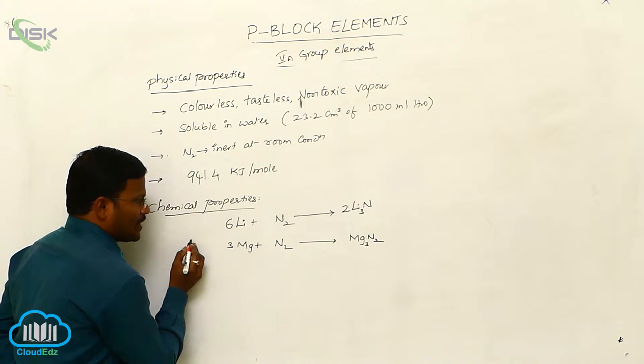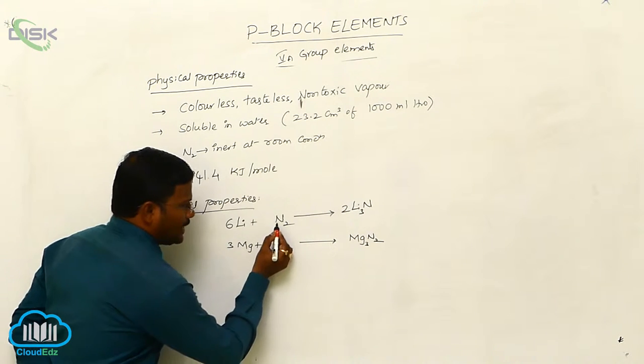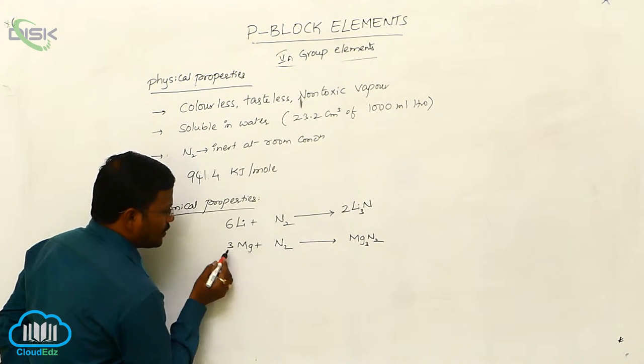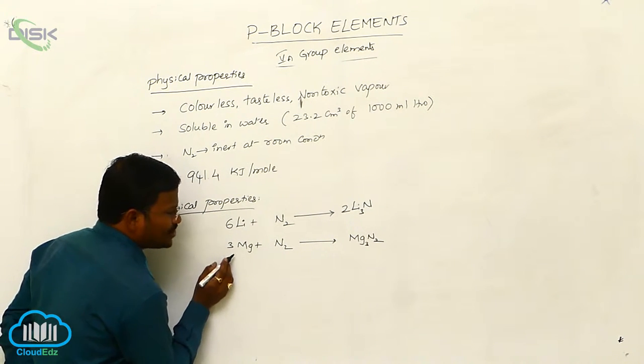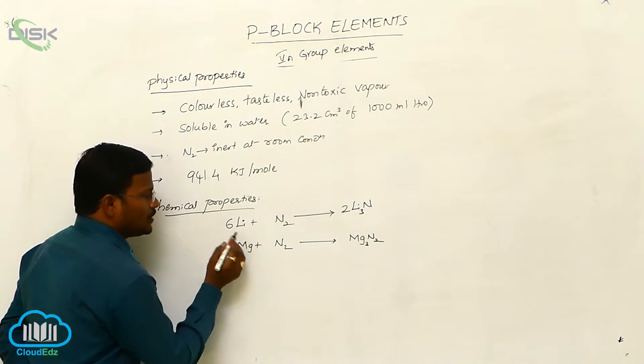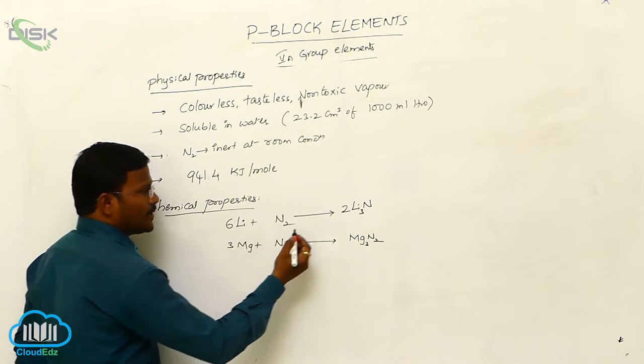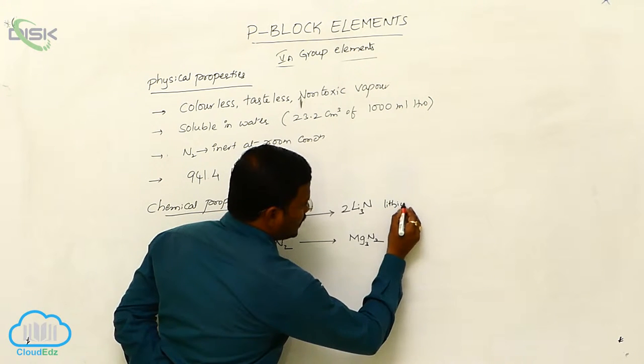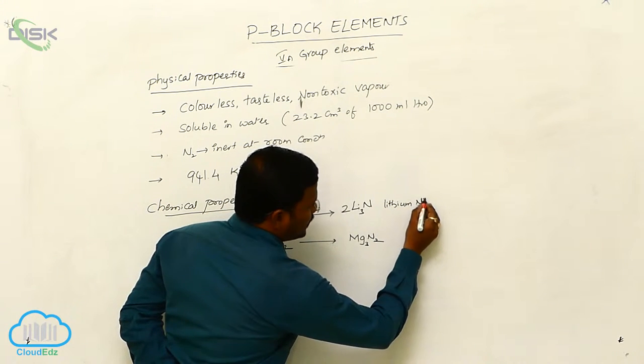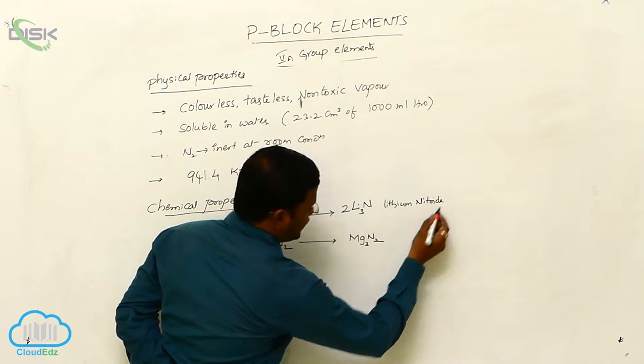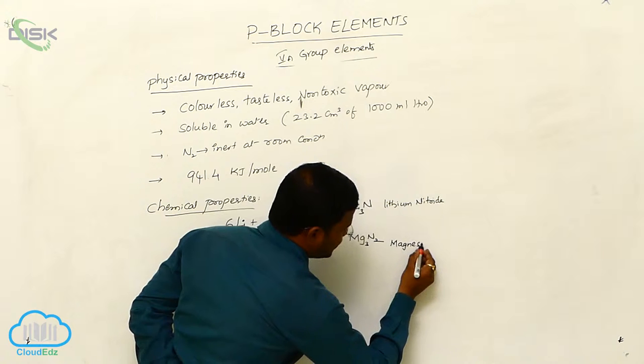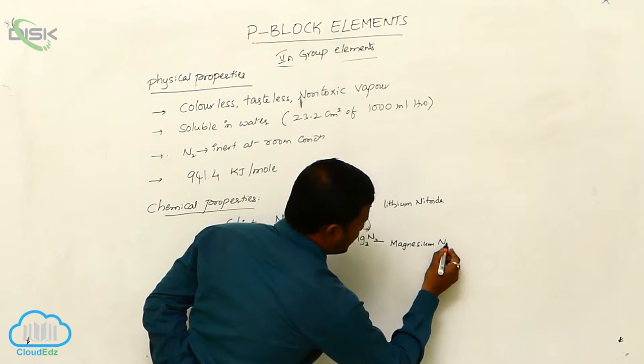During chemical properties, when dinitrogen gas at high temperature reacts with lithium, magnesium type of metals, they react with nitrogen gas and produce lithium nitride and magnesium nitride.